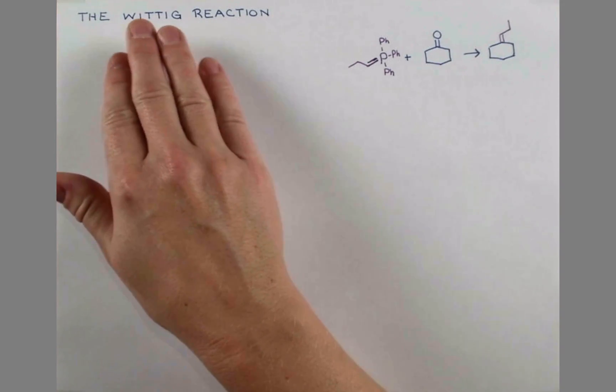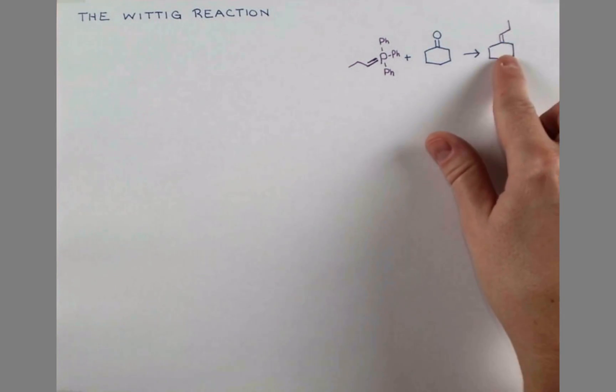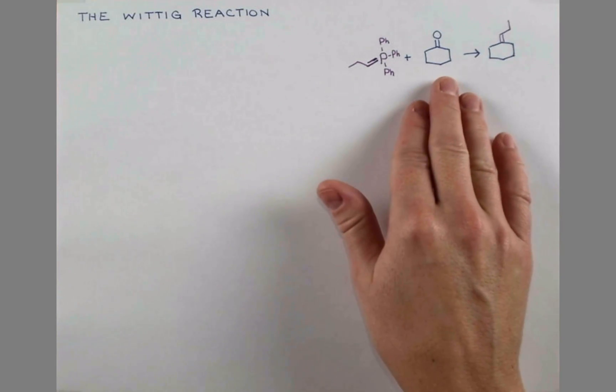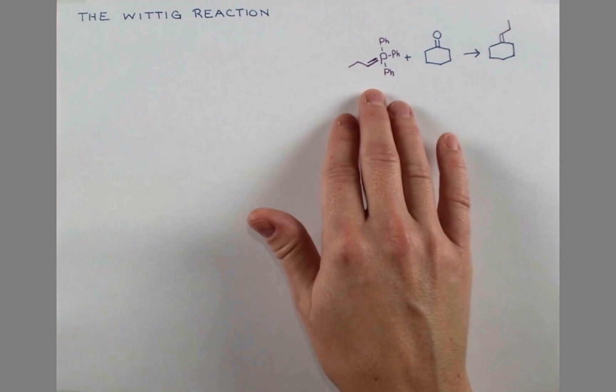In this lesson, we'll be discussing the Wittig reaction. This reaction produces alkenes from carbonyl compounds and this type of compound, which is called a phosphonium ylid.